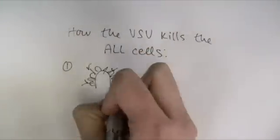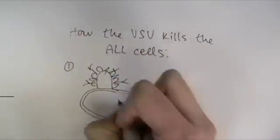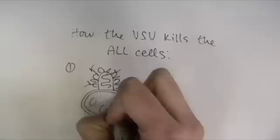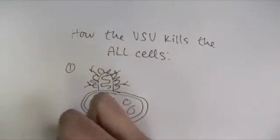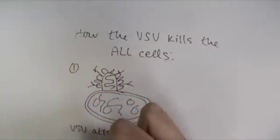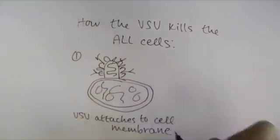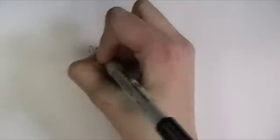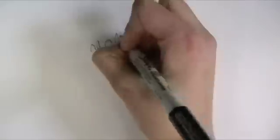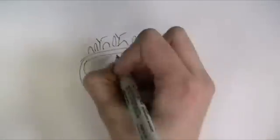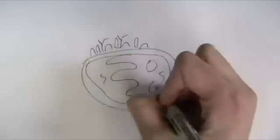Here is how the virus kills the ALL cells. First, the VSV attaches to the cell membrane. Next, the VSV injects its RNA into the cell.